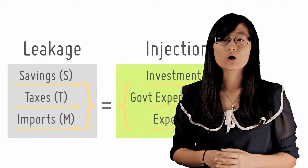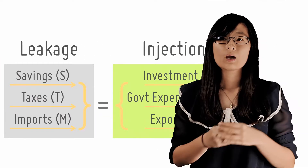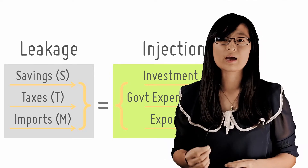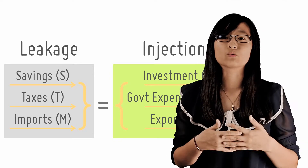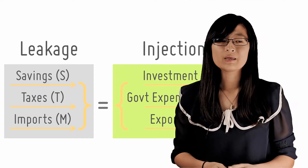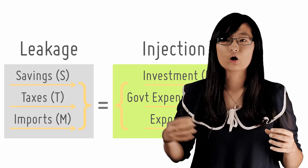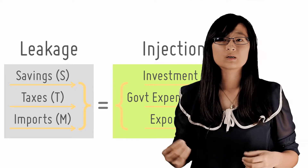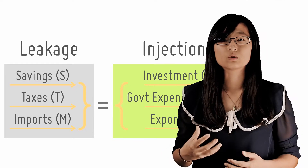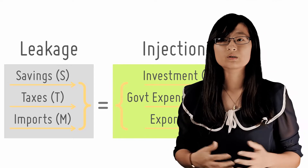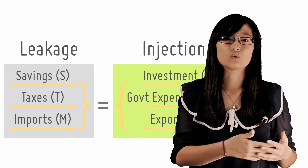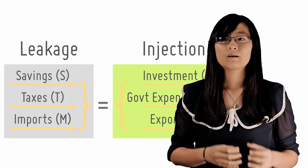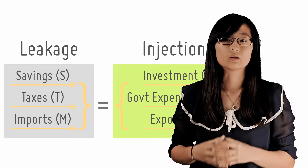So because there are no black holes in the economy, the sum of leakages or withdrawals must be equal to that of the injections when the economy is at equilibrium. Now, do note that this does not mean that individual leakages equal their corresponding injections. For example, savings do not need to be equal to investment, and government expenditure does not need to be equal to taxes. Some of the taxes our government collects goes into government reserves. Essentially, what this means is that the sum total of all leakages must equal the sum total of all injections.